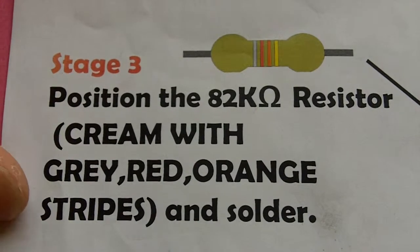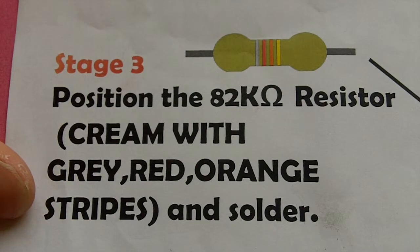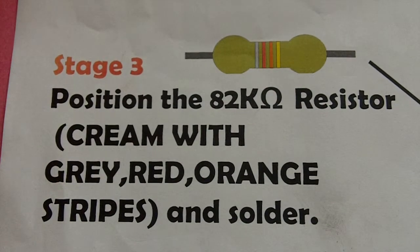It's now time for stage 3, which is to position the 82K resistor - the cream one with grey, red, and orange stripes - and then we need to solder it.